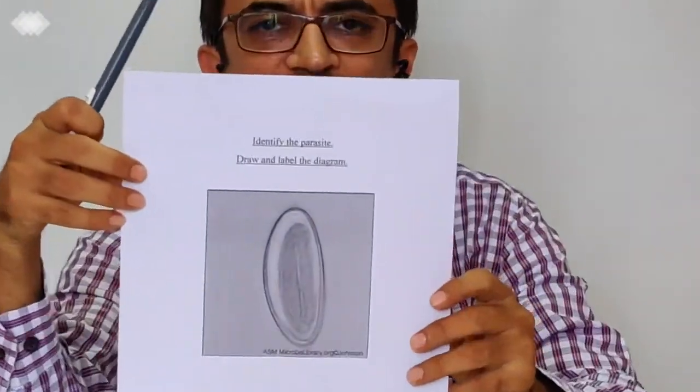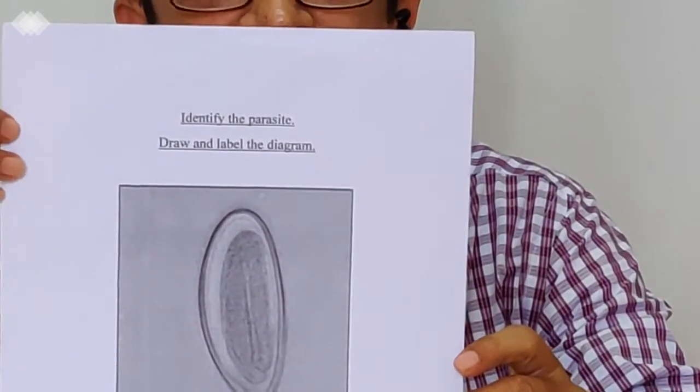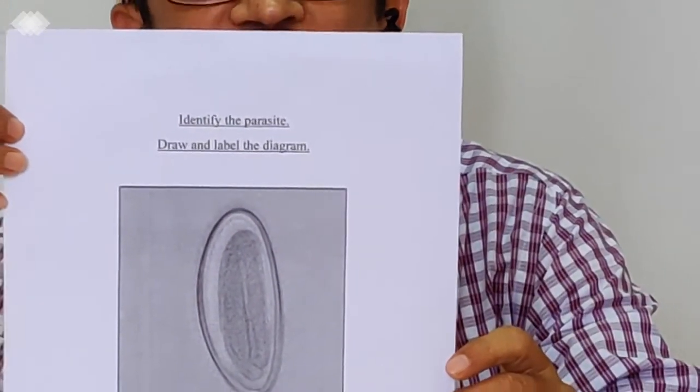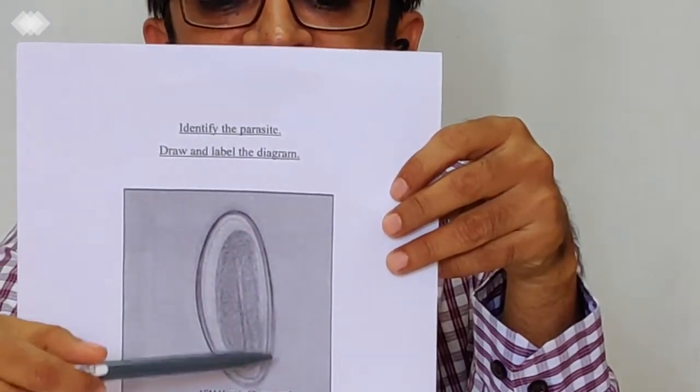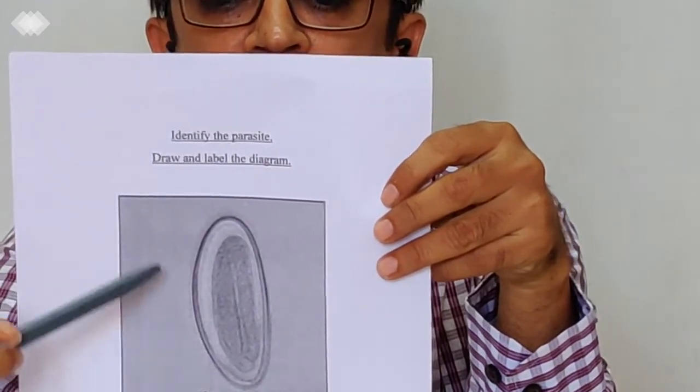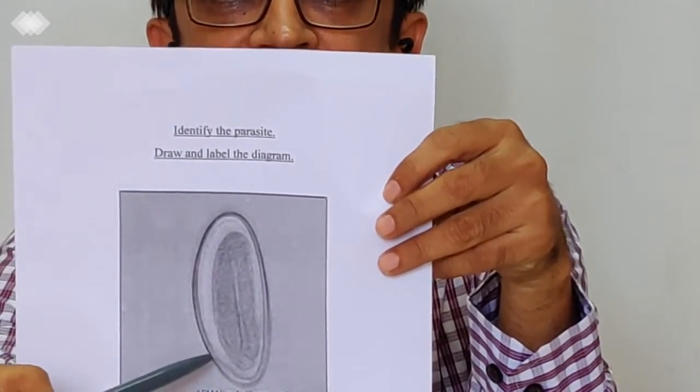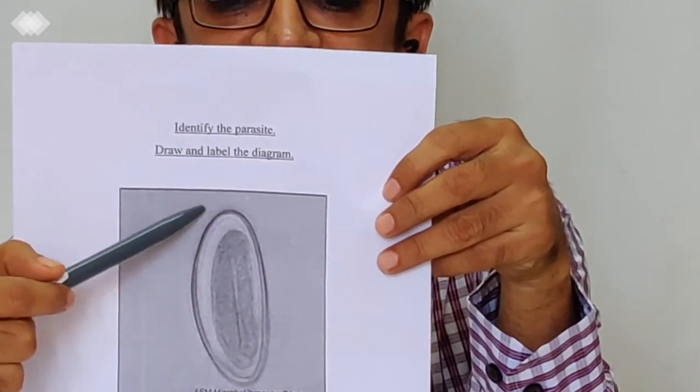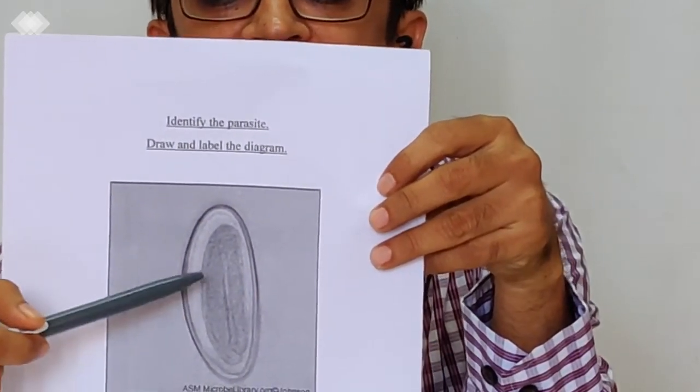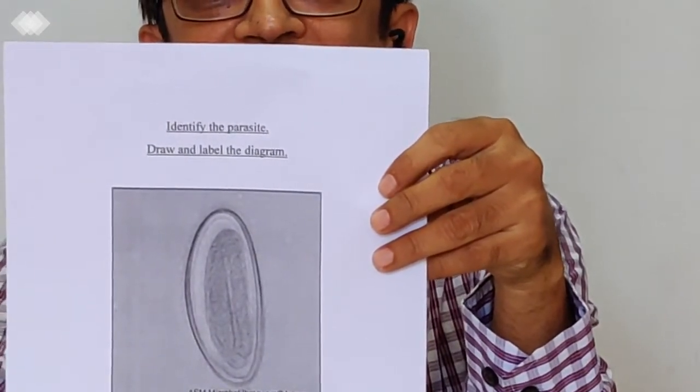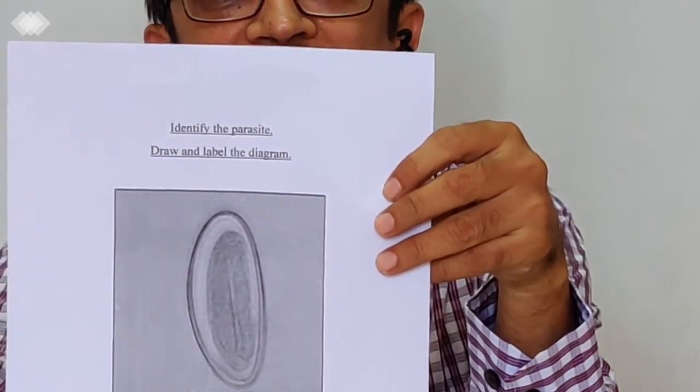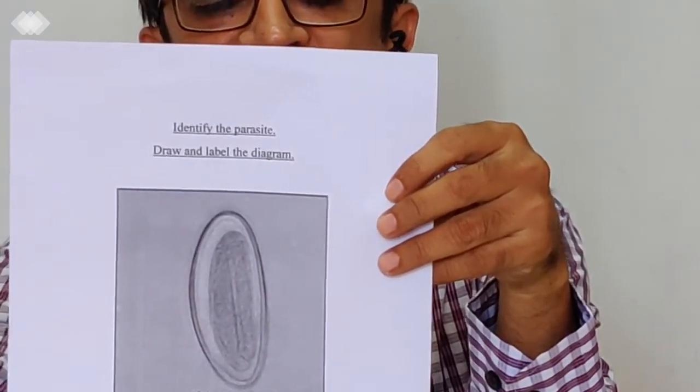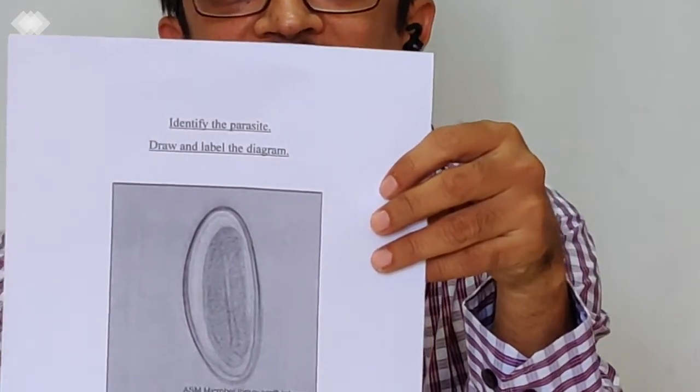And the last egg which we see is the egg of threadworm, or the pinworm, that is Enterobius vermicularis. The peculiar characteristic of this egg is its shape. It is known as plano-convex shape. One side is relatively flat, and one side is convex. And this egg can be seen in the NIH swab. Because, this egg are laid on the perianal skin. And in NIH swab, it would stick to the cellophane tape, and you can see that.